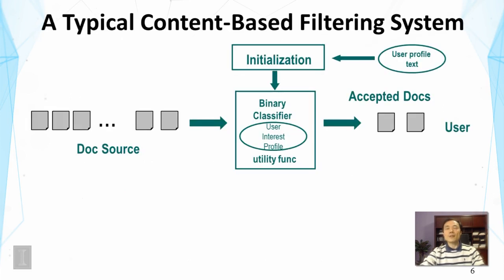In a content-based filtering system, there is a binary classifier with knowledge about the user's interest, called a user interest profile. The system maintains this profile to track the user's interest and uses a utility function to guide decisions. It helps the system decide where to set the threshold. An initialization module takes user input — perhaps specified keywords or a chosen category — to feed the system with an initial user profile.